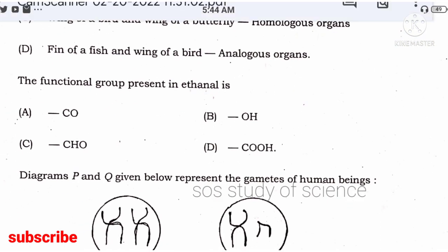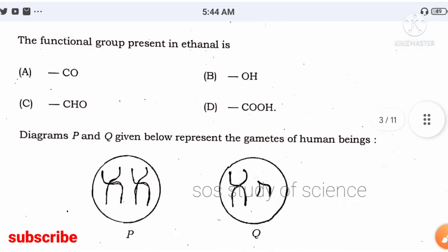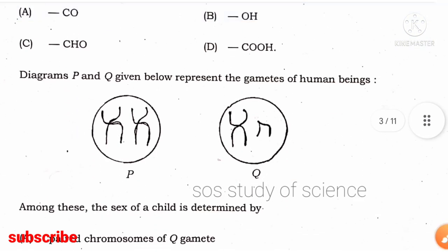They will ask a functional group question. The functional group present in ethanol — 'ol' means it belongs to the –OH group. 'Al' in ethanol means aldehyde, which is represented by –CHO. Next, they have given one skill-based equation question — this type of question may also be asked in today's examination.